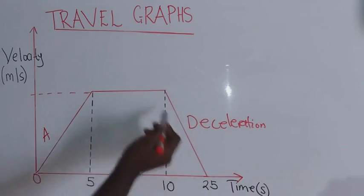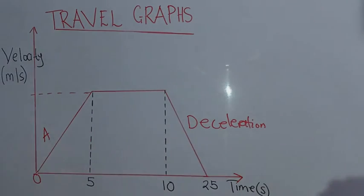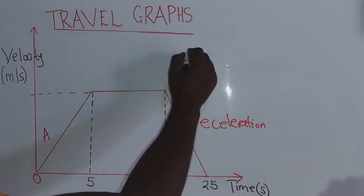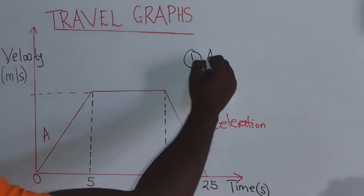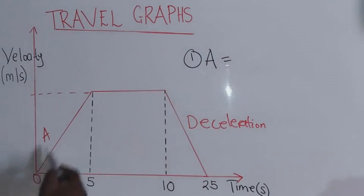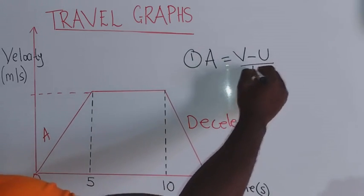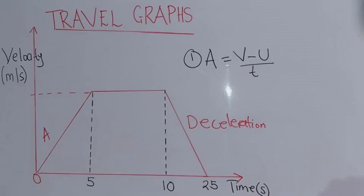This deceleration is a negative acceleration — it is slowing down. Under the velocity-time graph, formulas are very important. Formula one: acceleration is equal to final velocity minus initial velocity, over time. That is the first formula you must know. Apart from this, you must also know how to find the distance traveled throughout the journey.